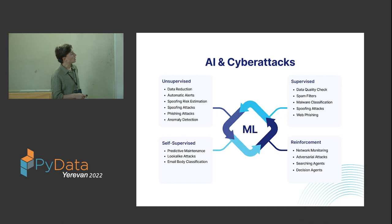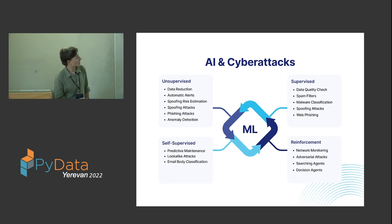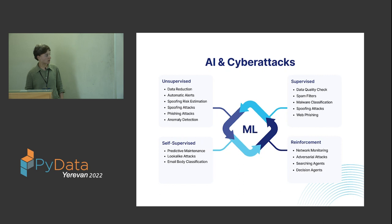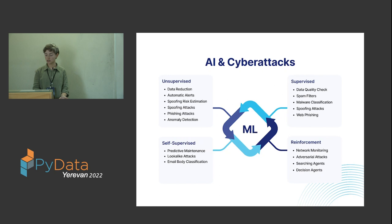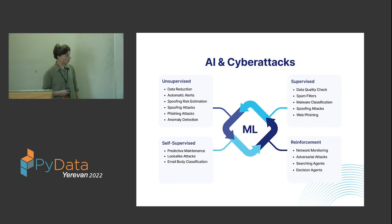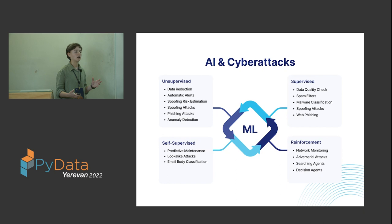For supervised learning we have the problems of phishing detection again — because in some cases you do have labeled data — as well as spoofing detection, data quality checks, spam filters, and so on. For reinforcement learning, for example network monitoring, the patterns always change and you need to detect zero-day attacks; you need reinforcement learning to always keep your model up to date. Also adversarial attacks, searching agents, and decision agents for detection of cyber attacks. For self-supervised learning we want to mention predictive maintenance, lookalike attacks, and email body classification, because in those cases you have techniques to label your data and not having labeled data is not a problem.